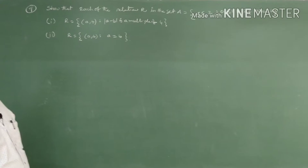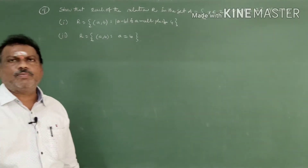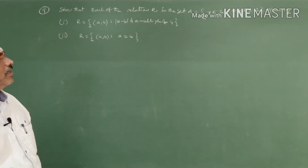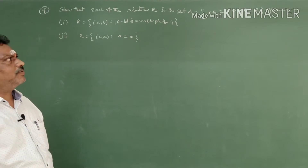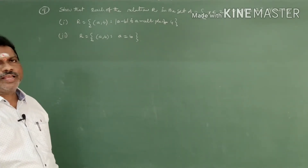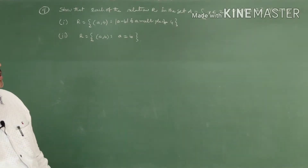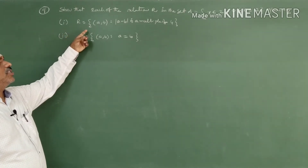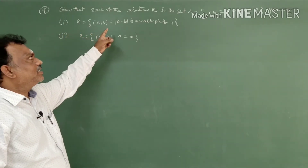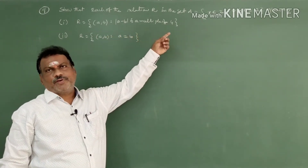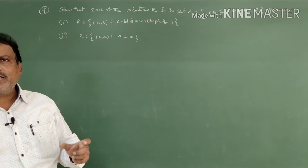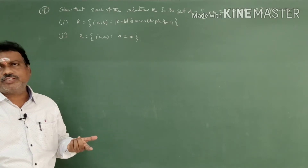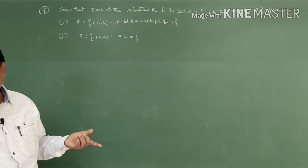Students, we continue with problem number nine. Show that each relation R in set A, where A is the set of x belonging to Z with values between 0 to 12 including both 0 and 12. Two relations are given. The first subdivision: R equals the set of ordered pairs (a,b) such that mod of a minus b is a multiple of four. Multiple of four means divisible by four exactly — for example, 4, 8, 12, 16.